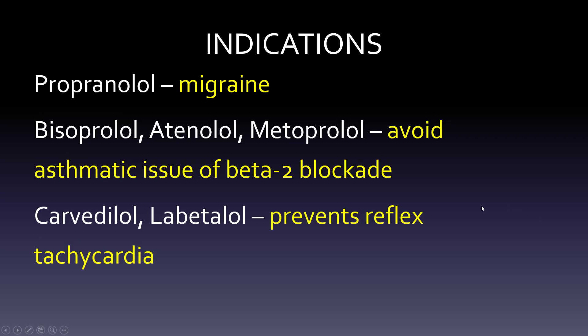When you look at propranolol, when it first came out, many patients found their migraines were gone, so clinicians started using it for migraine prevention. Propranolol is really good at helping prevent migraines. But because of that beta-2 blocking activity, the second generation drugs — bisoprolol, atenolol, metoprolol — were developed to avoid the asthmatic issue of beta-2 blockade.